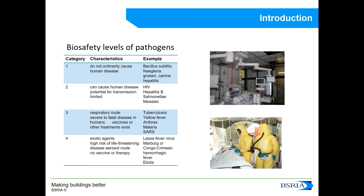We're going to begin with a brief introduction to the category levels of pathogens and how as engineers we use air to contain airborne infection. Pathogens are classified in four biosafety levels. Level one are pathogens which do not normally cause human disease, such as Bacillus subtilis. Level two can cause human disease but potential for transmission is limited. Biosafety level three are those that can be transmitted via the air, and biosafety level four are exotic agents, for example Ebola.